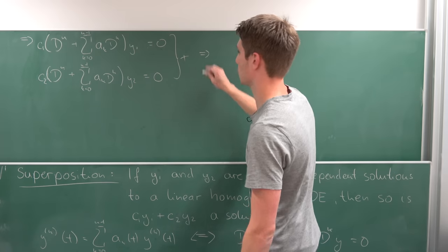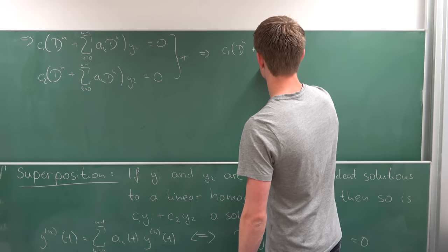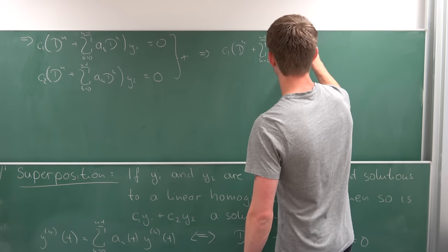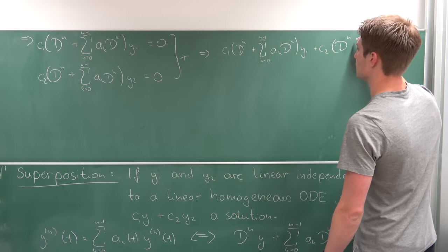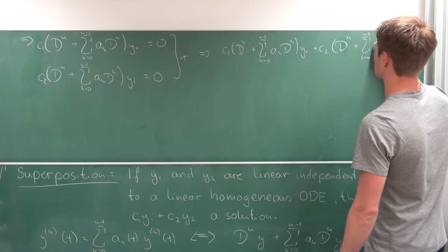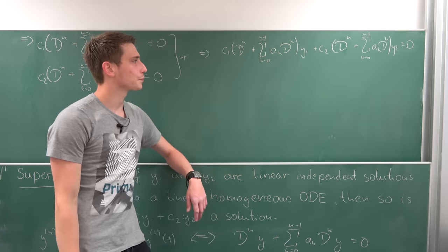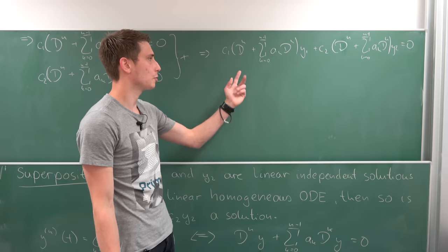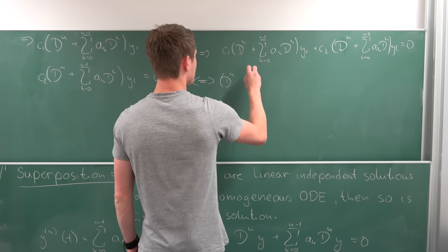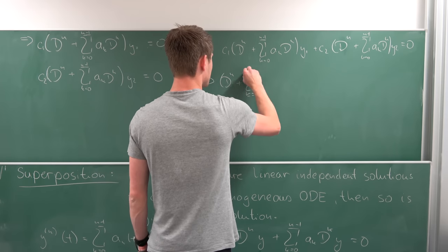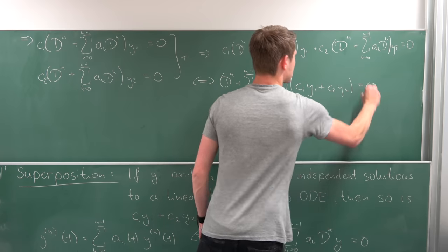Let's add those two together. So at first we have c1 times this chunk right here, D^n plus the sum going from k equals 0 to n minus 1 of ak D^k y1, and also adding the second equation plus some c2 and once again this differential operator D^n plus the sum going from k equals 0 to n minus 1 ak D^k y2, and this whole chunk is equal to 0. So that's really nice because we can factor out this differential operator right here and then we are basically done. So that's equivalent to saying we have this differential operator D^n plus the sum going from k equals 0 to n minus 1 ak D^k times, and now we have c1 y1 plus c2 y2, and this is equal to 0.